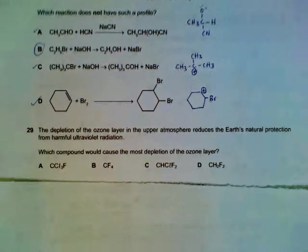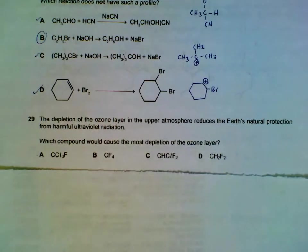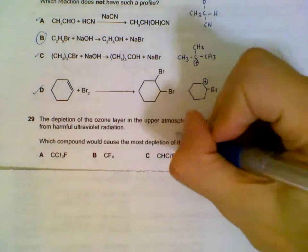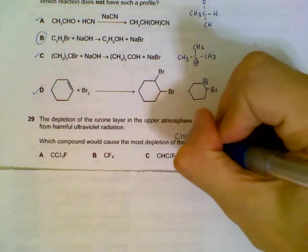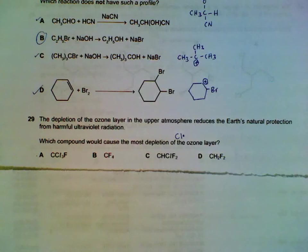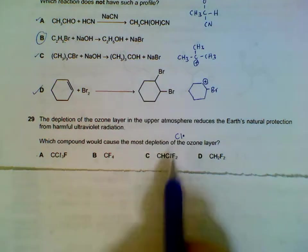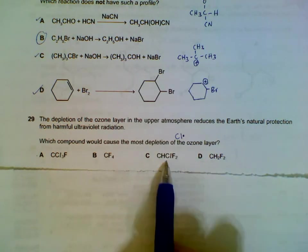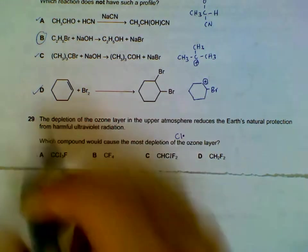Question 29: which one will cause the most depletion of the ozone layer? You have to attribute the depletion of ozone layer to radicals like chlorine and bromine. So the one that has the most chlorine will be the one that affects the ozone layer the most, which is A.